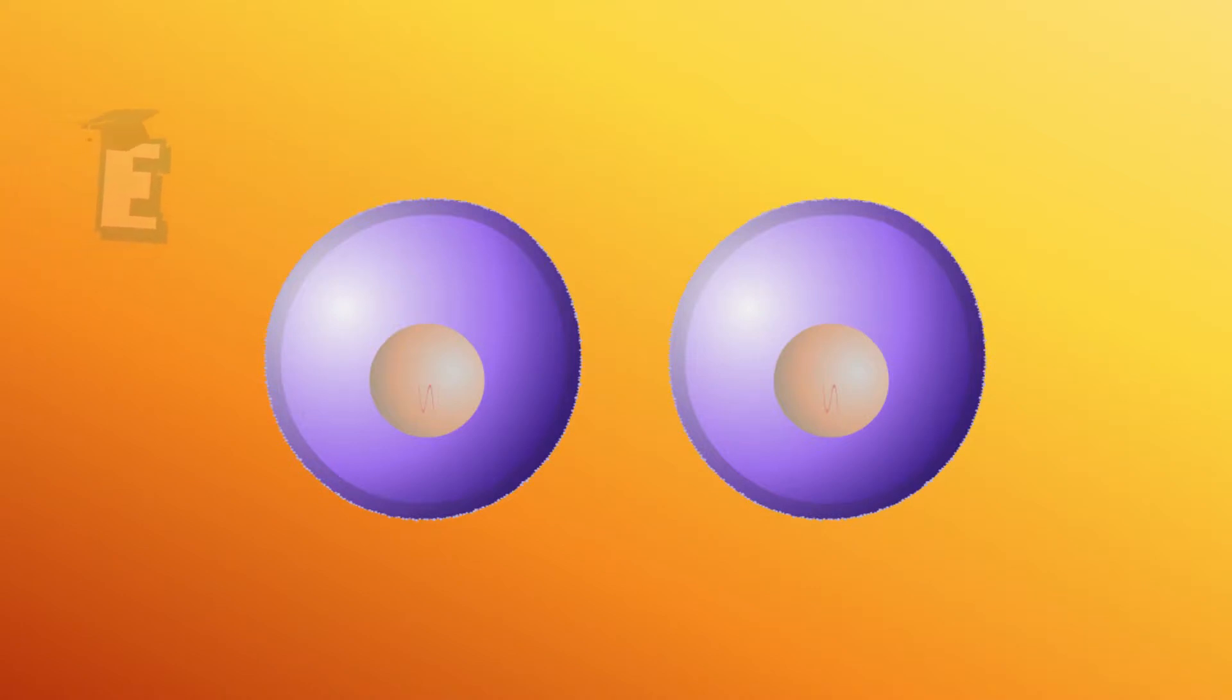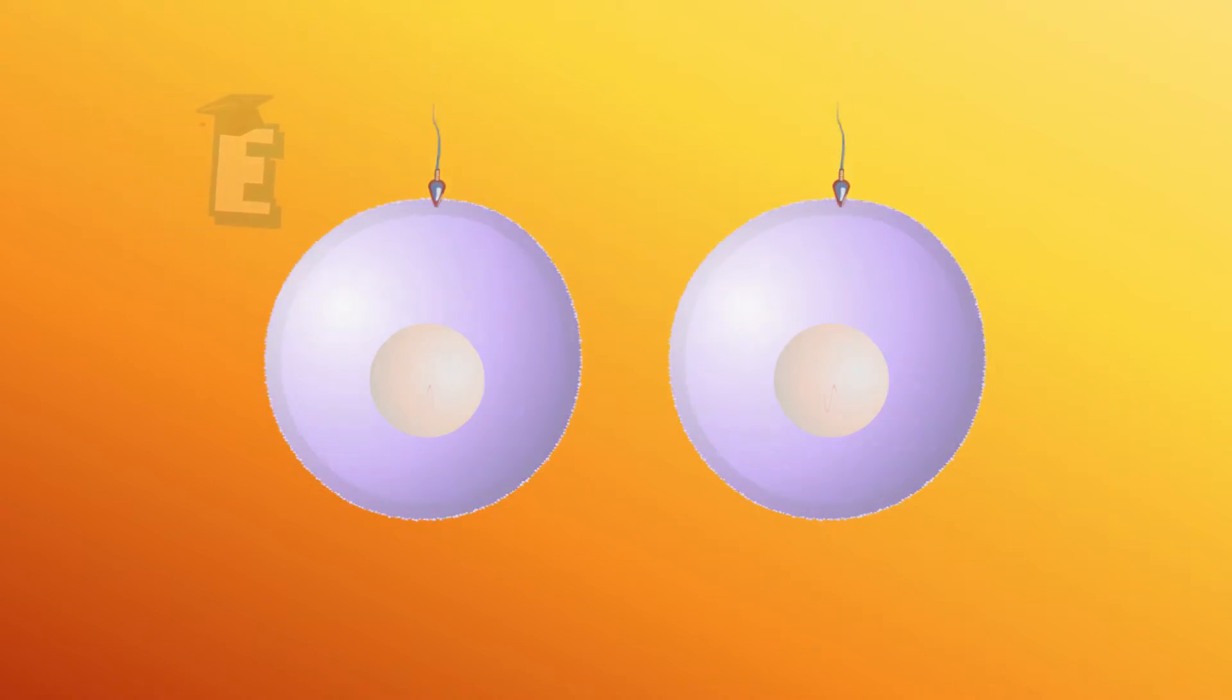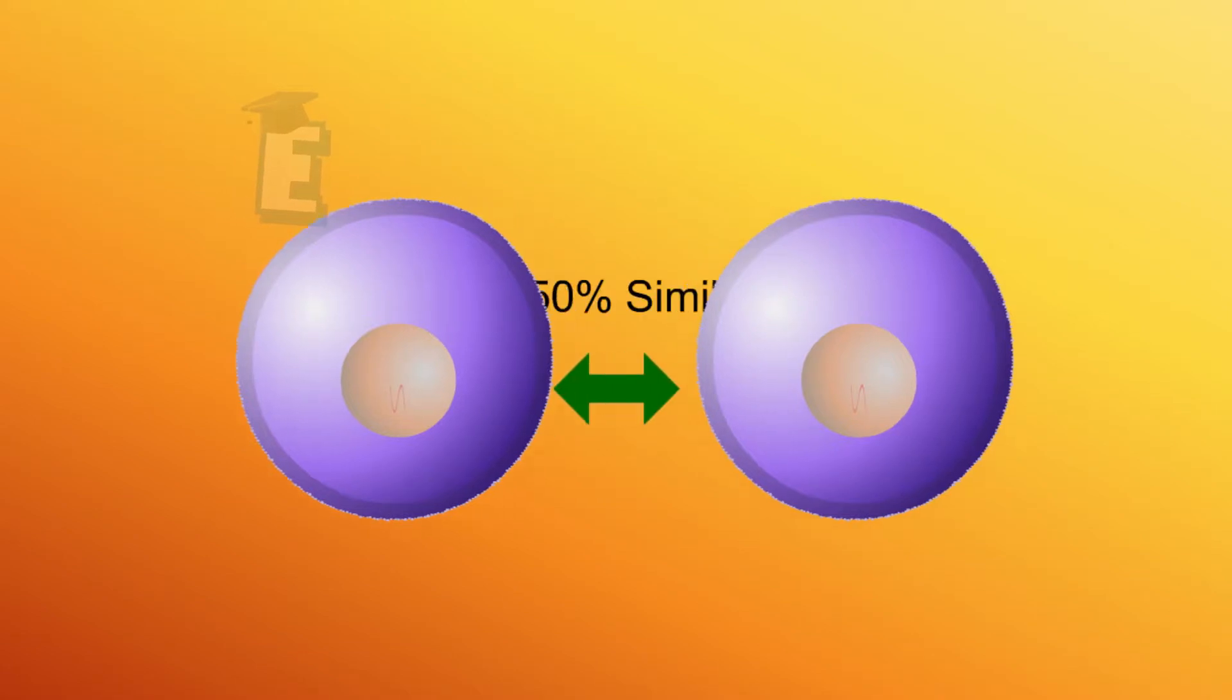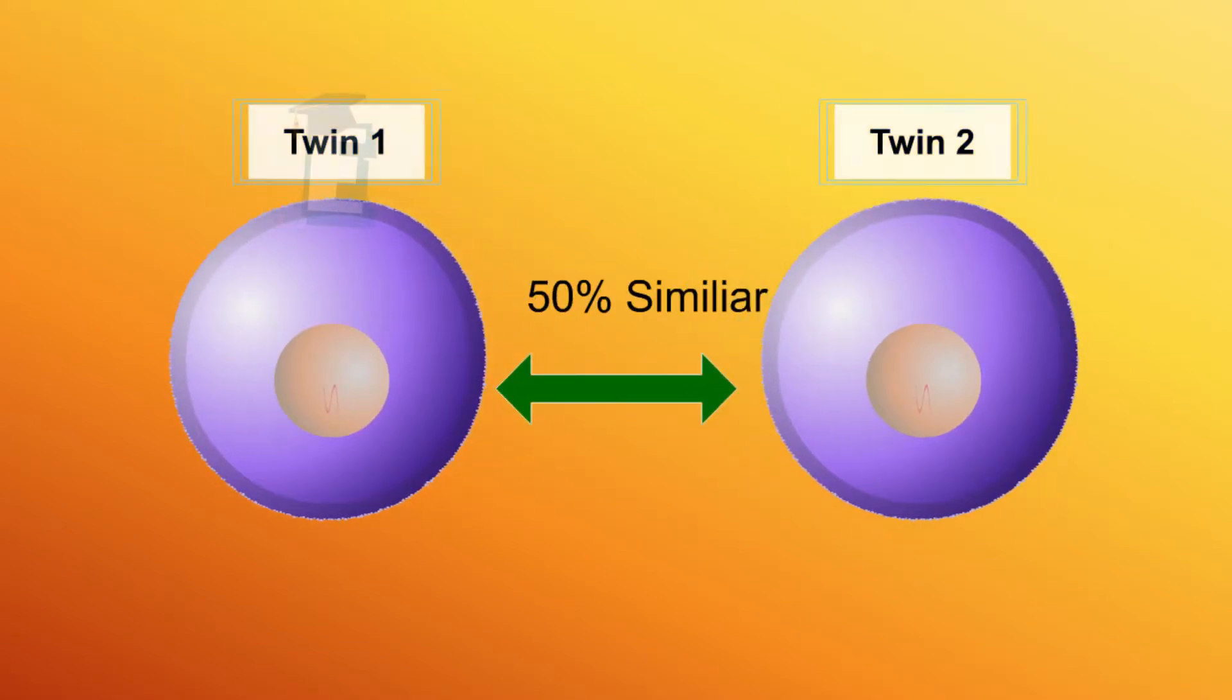However, two egg cells can also be produced at the same time. If these egg cells are fertilized by two different sperm cells at the same time, two different zygotes will be formed. However, subsequent development stages will still be the same as the usual gestation.